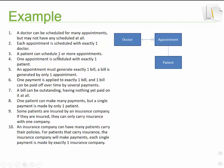A patient can schedule one or more appointments. 'Can' means it's optional, and they can schedule one or more appointments. Step number four: one appointment is scheduled with exactly one patient, meaning that you can't have an appointment if there's no patient present.